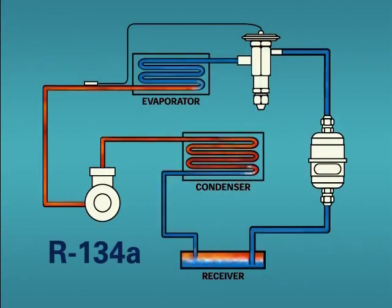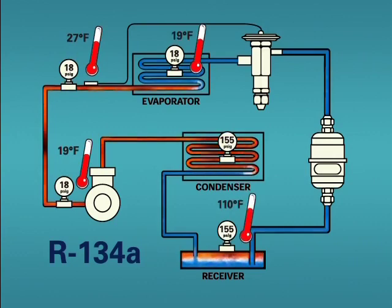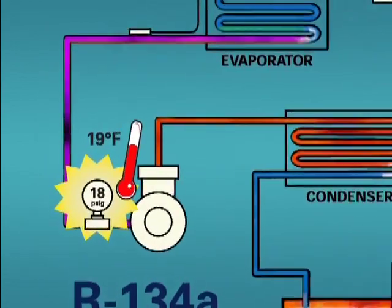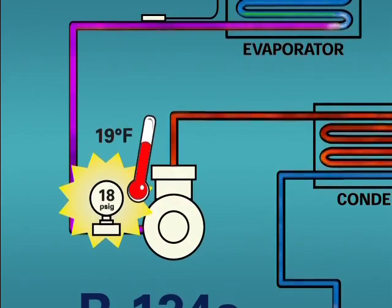Understanding the refrigerant pressure-temperature relationship in the various parts of a system will help identify and pinpoint problem areas. Because the values at the inlet of the compressor indicate a saturated condition, we know we have a problem. In this case, we have flood back because in the suction line, the refrigerant should only exist as a vapor.